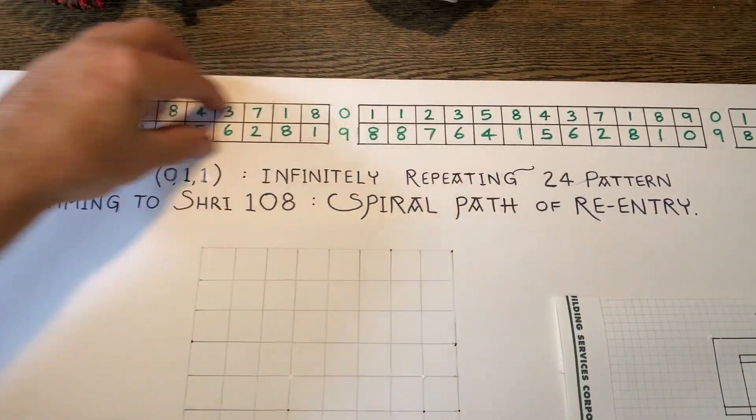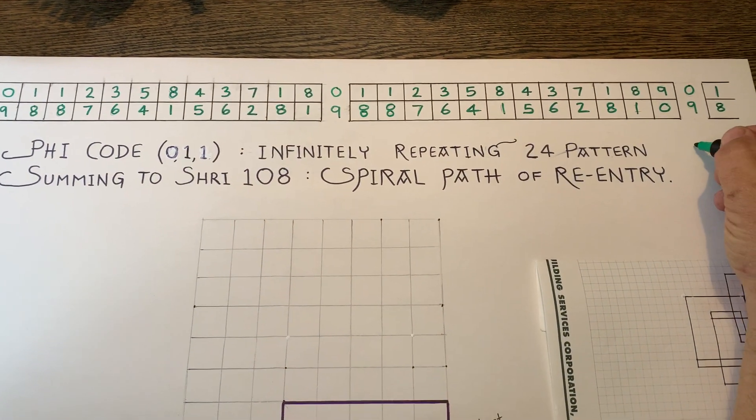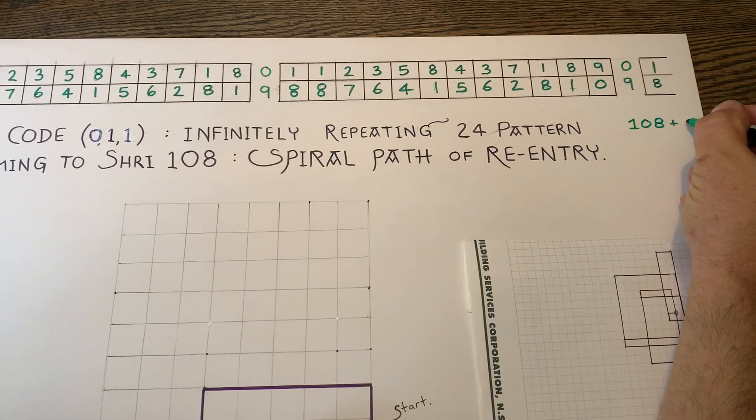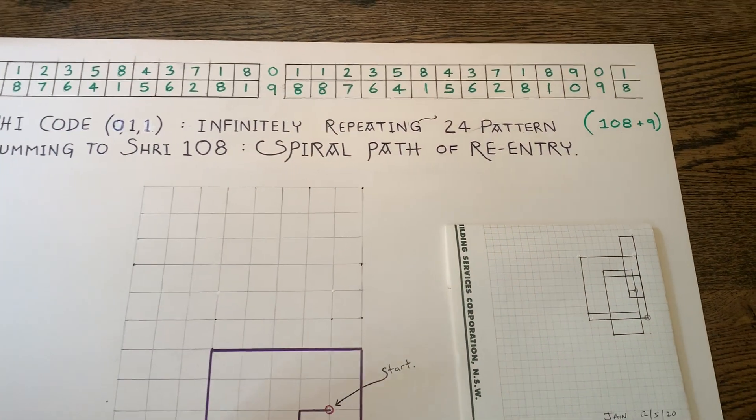So 12 nines or one oh eight, nine, one oh eight, nine. So the real pattern is called one oh eight plus the nine. That's what repeats forever. A one oh eight nine code. And so I've drawn up a graph here.